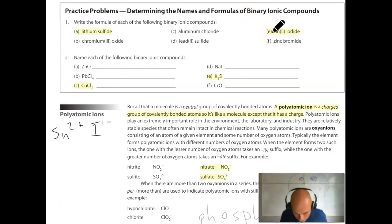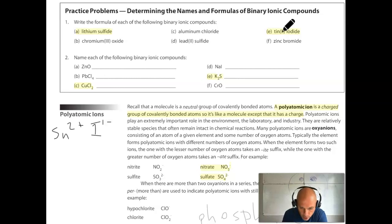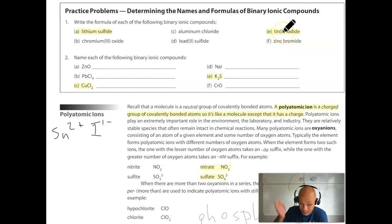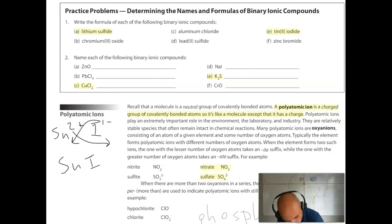Now looking at practice problem 1E: tin(II) iodide. Tin is one of those multivalent ions — a transition metal that can have more than one charge — and the Roman numeral II tells us it's a 2+ ion. Iodide, because it's in the seventh column, will always form a 1− ion. Using the crisscross method, it's going to be two iodides and one tin, giving us SnI2.